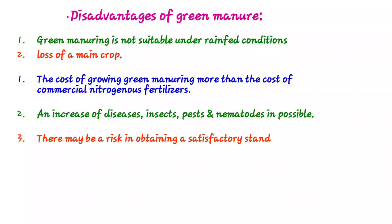Another disadvantage is loss of one crop, because in some regions the whole season must be used to grow the green manure crop. The cost of growing green manure crops may be more than the cost of commercial nitrogenous fertilizer — for example, planting Sesbania can cost more than using urea. Green manuring may also increase diseases, pests, insects, and nematodes. There is also a risk of unsatisfactory stand and growth of the green manure crop.